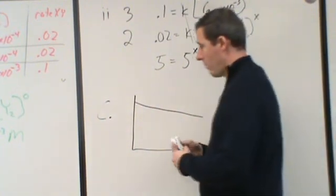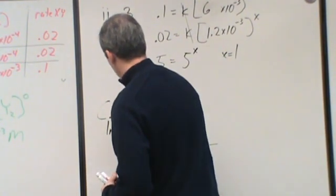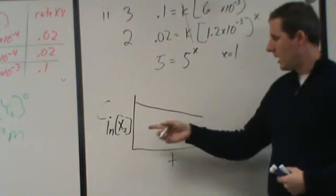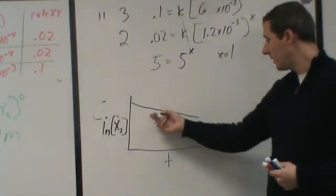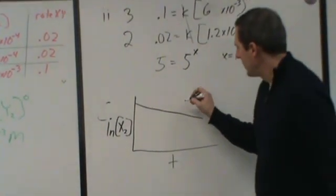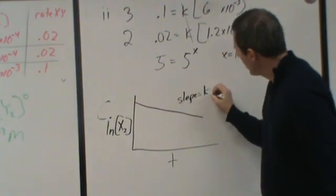So for first order like this, that would be this. You would take natural log of your concentration of x2 and plot that versus time. If you plot natural log of your concentration versus time for a first order reaction, you'll get a negative slope line as long as you're plotting a reactant. And then the slope of that will be k.